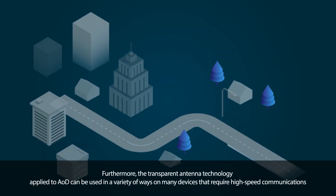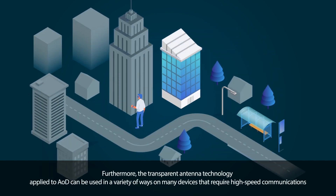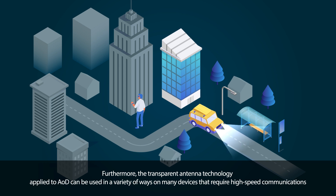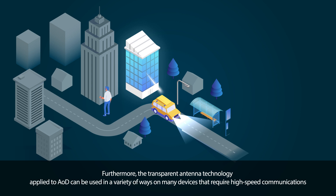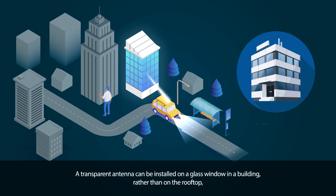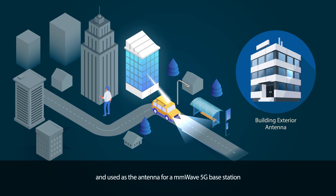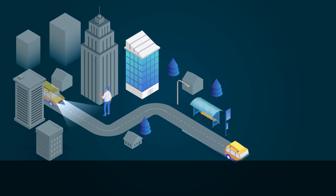Furthermore, the transparent antenna technology applied to AOD can be used in a variety of ways on many devices that require high-speed communications. A transparent antenna can be installed on a glass window in a building rather than on the rooftop, and used as the antenna for a millimeter wave 5G base station.